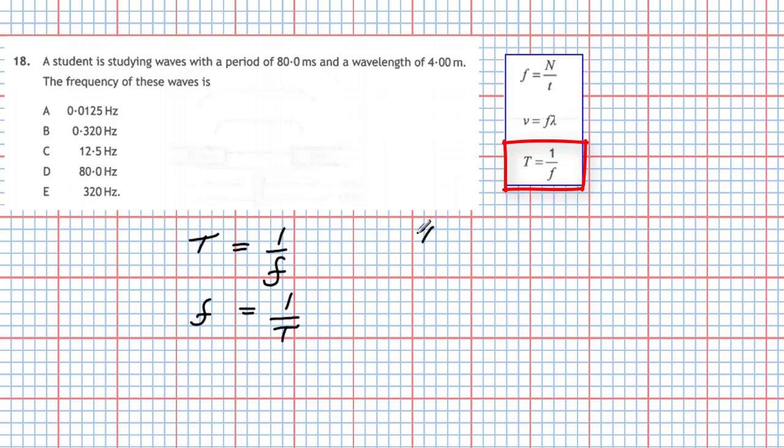But be careful because the period T is written as 80.0 milliseconds. So we have to change that into seconds. A millisecond will be simply 80.0 times 10 to the minus 3 of a second. So therefore the frequency is going to be equal to 1 divided by 80 times 10 to the minus 3 of a second.